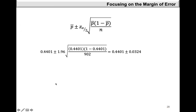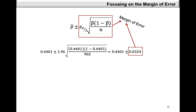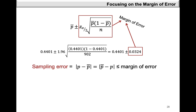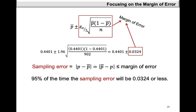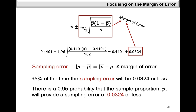Our margin of error is 0.0324, meaning that the sampling error — the absolute difference between P and P-bar — will be at most 0.0324. So 95% of the time the sampling error will be 0.0324 or less. We can report this as: the probability that the sample proportion will provide a sampling error of 0.0324 or less is equal to 0.95, relating to the probability statement in video 1.